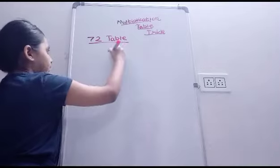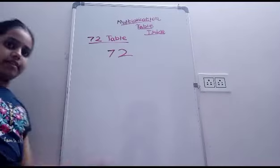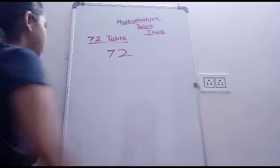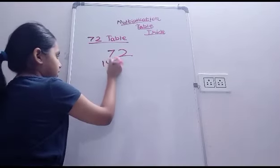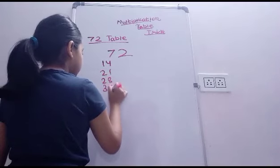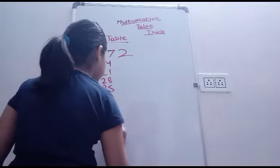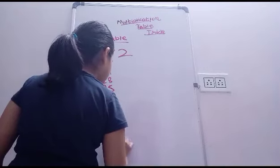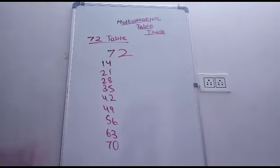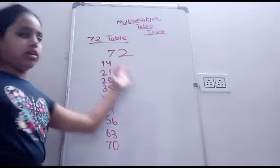Now first we'll write the number 72. Now we'll write 7 table and 2 table. See, 7 times 1 is 7, 7 times 2 is 14, 7 times 3 is 21, 7 times 4 is 28, 7 times 5 is 35, 7 times 6 is 42, 7 times 7 is 49, 7 times 8 is 56, 7 times 9 is 63, and 7 times 10 is 70. Very good, now this is the whole table.